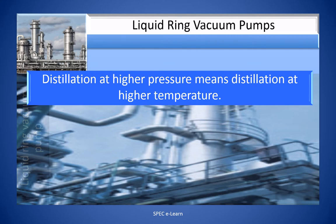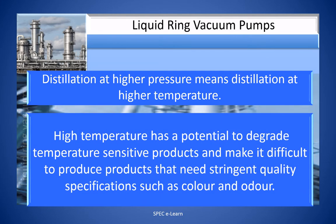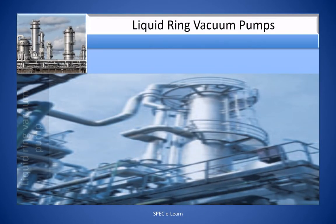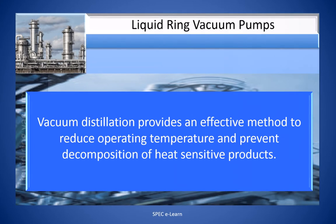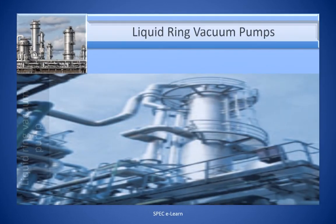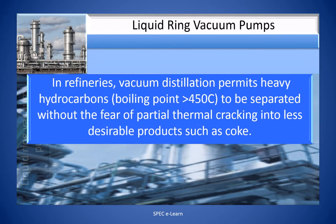Distillation at higher pressure means distillation at higher temperature. High temperature has potential to degrade temperature-sensitive products and make it difficult to produce products that need stringent quality specifications such as color and odor. In refineries, vacuum distillation provides an effective method to reduce operating temperature and prevent decomposition of heat-sensitive products. It also permits heavy hydrocarbons with boiling points greater than 450°C to be separated without the fear of partial thermal cracking into less desirable products such as coke.